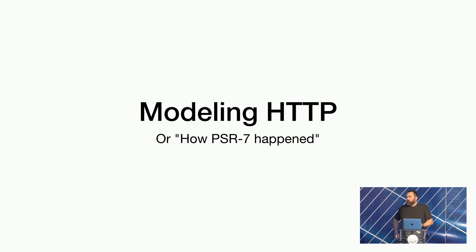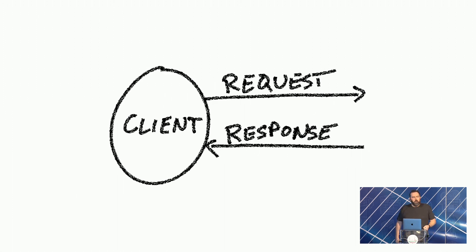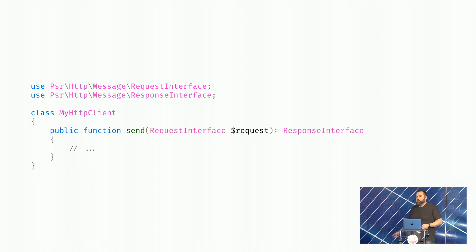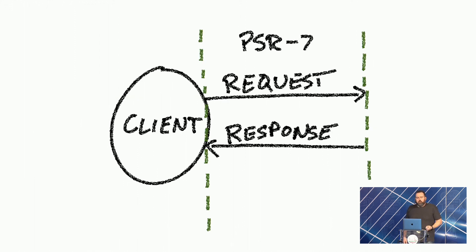So FIG went around to start modeling HTTP, and this is where we ended up with PSR-7. PSR-7 is focusing just on the request and response of the client. In order to send the request and response, this is all we would actually need to do to create this hypothetical standardized HTTP client that could consume a request and return a response. The original goal of PSR-7 was just to handle the request and response for making client requests over HTTP.